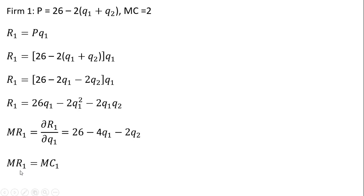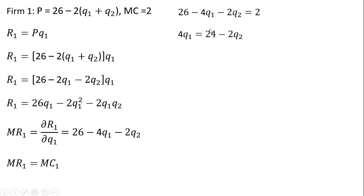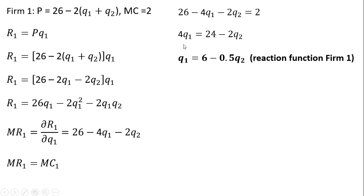To maximize profits, we set marginal revenue equal to marginal cost. The marginal cost for firm 1 is 2. If it were some other number, we would plug that number into the right-hand side of this equation. Solving for firm 1's output: 26 minus 2 gives us 24, and dividing through by 4 we get firm 1's reaction function.